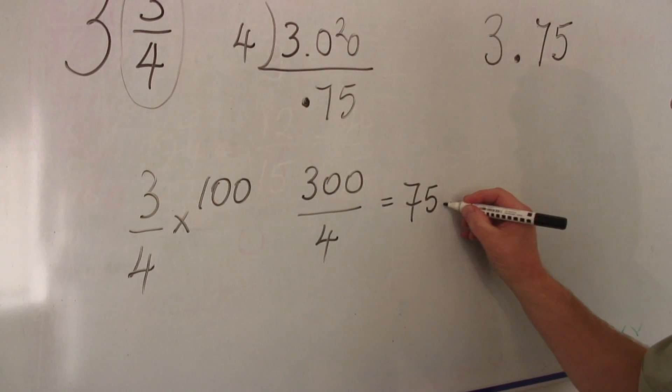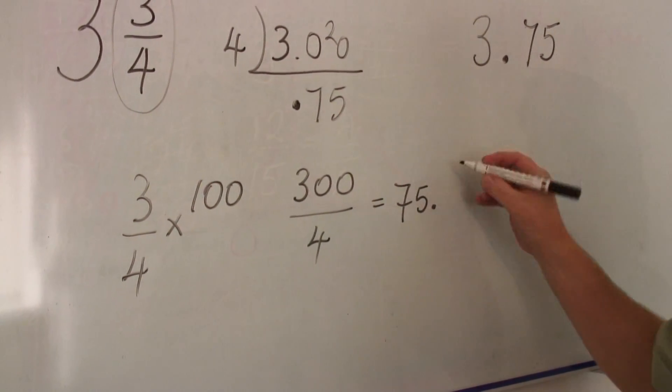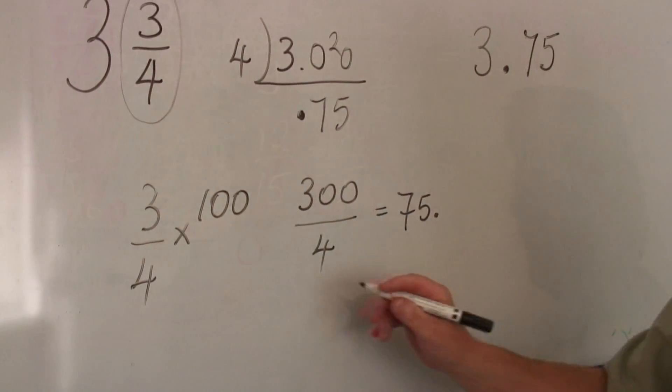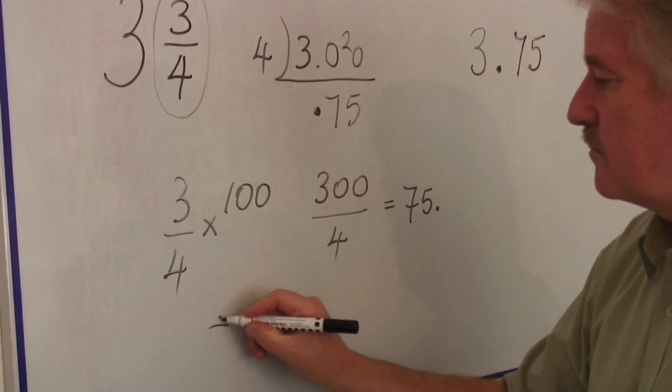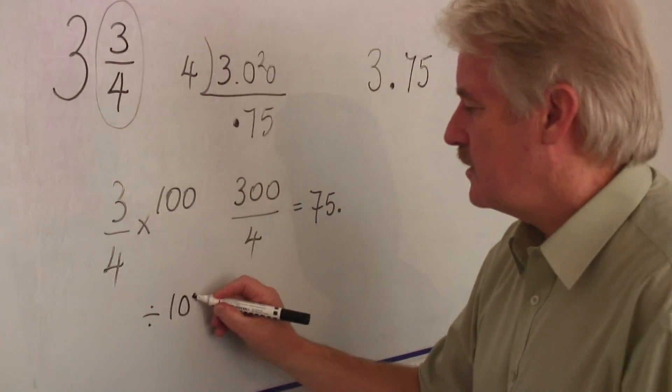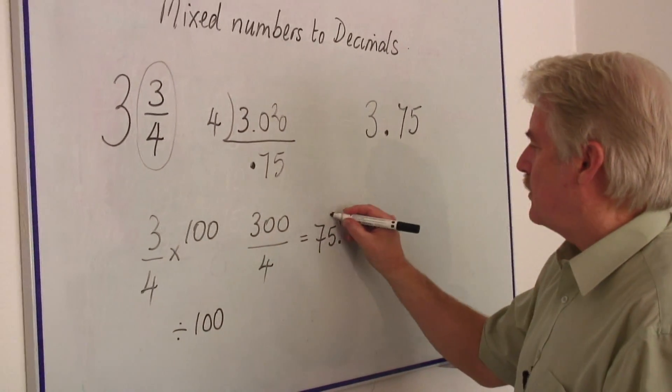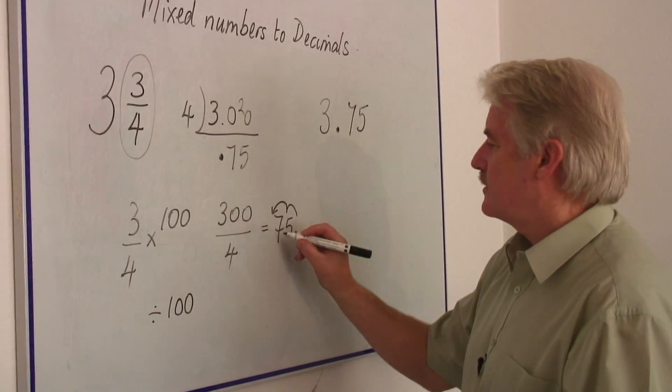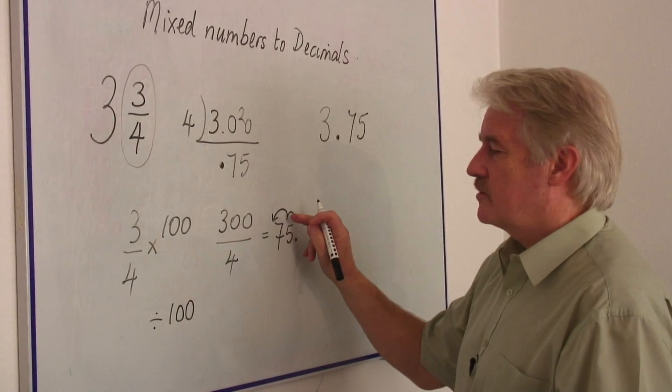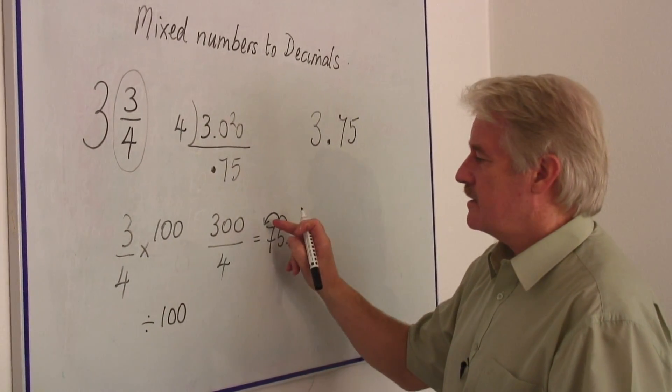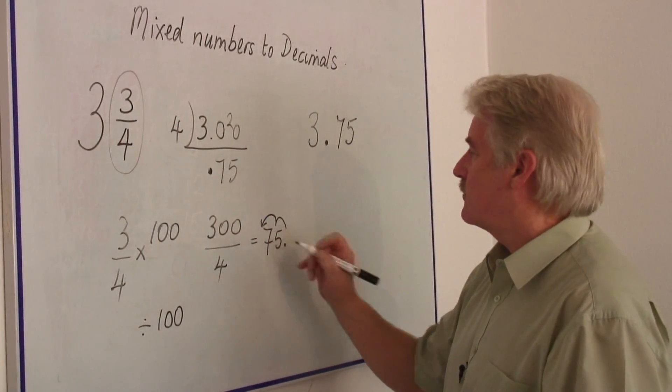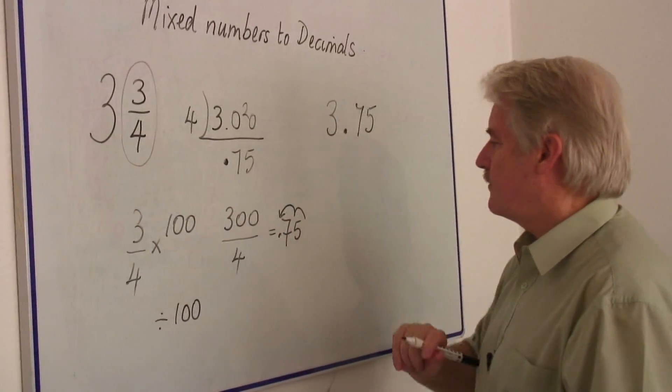Now, that's seventy-five point something. To divide it now by a hundred, we've multiplied by a hundred, we must now divide it by a hundred. Move the decimal point two places to the left. Once, divide it by ten. The second time makes it divided by a hundred. Again, point seven five.